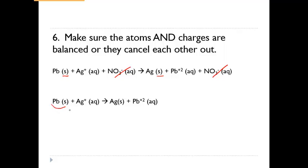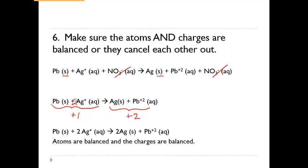Notice that the charges don't balance: on one side we have only a +1 total charge, but on the product side we have +2. To keep a balanced equation, we need to increase this side — if we have 2 silvers, that's 2 pluses, which balances both sides. We also need to fix the product side to have 2 silvers there as well. Now the atoms are balanced — same amount of lead on each side, same amount of silver — and the charges are balanced too.